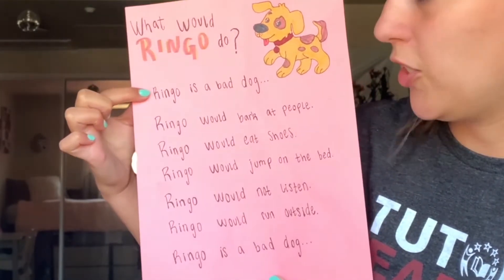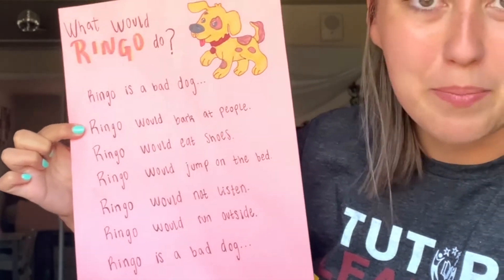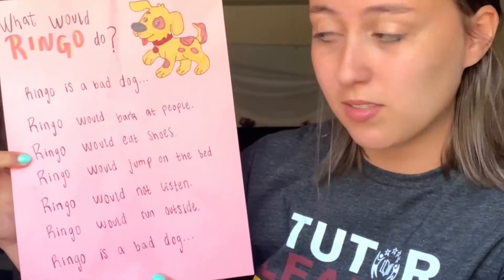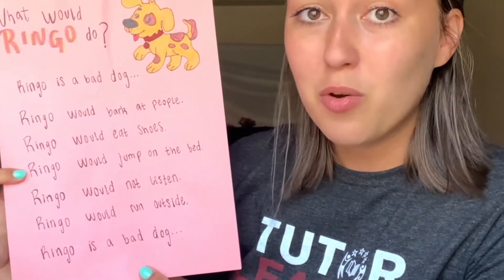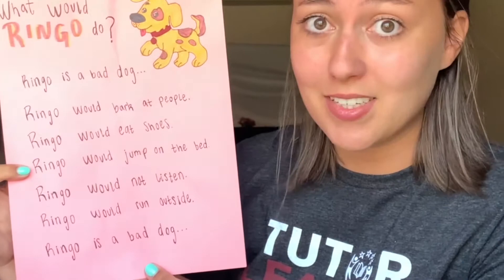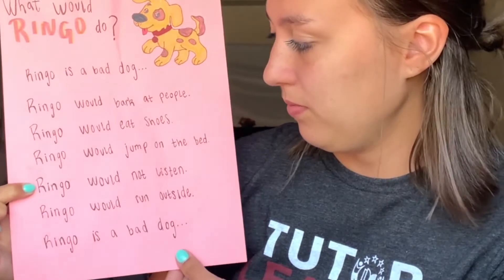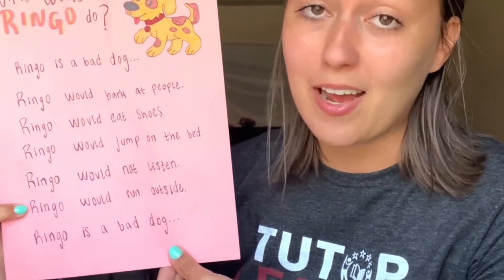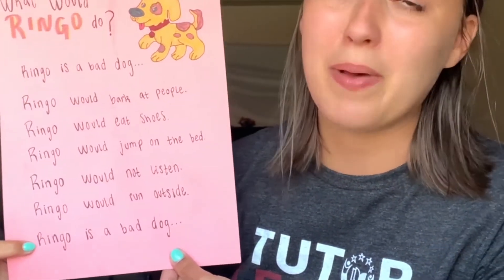Ringo is a bad dog. Ringo would bark at people. Ringo would eat shoes. Ringo would jump on the bed. Ringo would not listen. Ringo would run outside. Ringo is a bad dog.